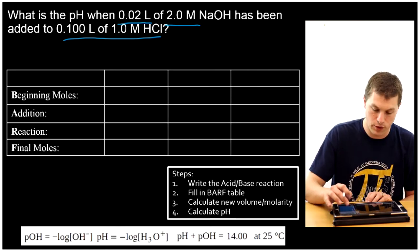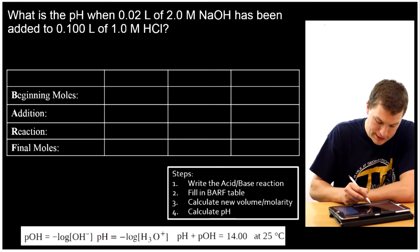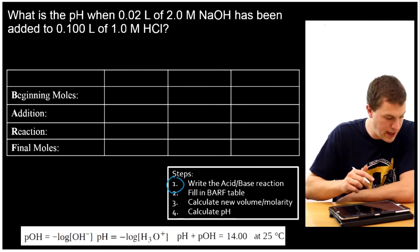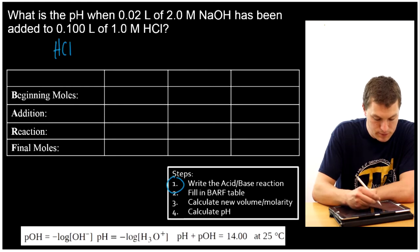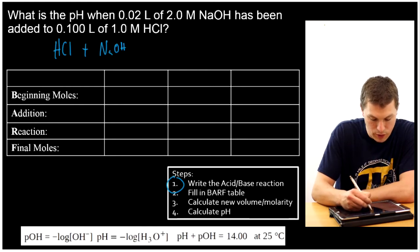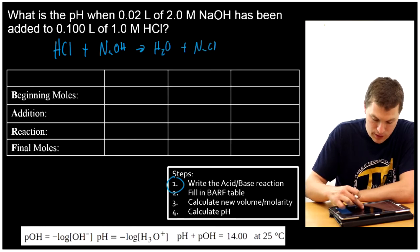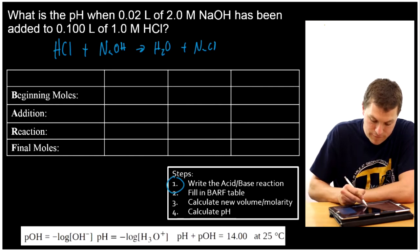All right, so how do we do this? The first step is to write our acid-base reaction. In this case, we are going to take HCl and add sodium hydroxide, and we are going to get H2O — our water — plus sodium chloride. That's the first step, and we want that to be balanced, and it is.